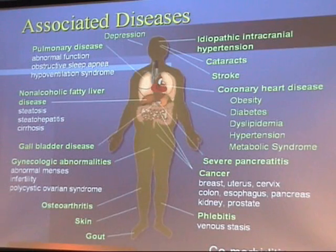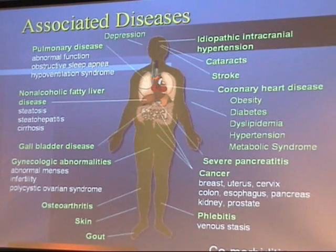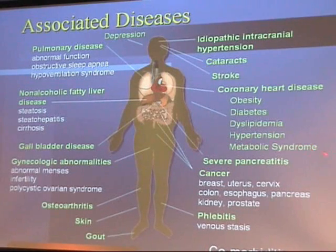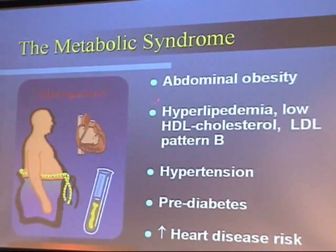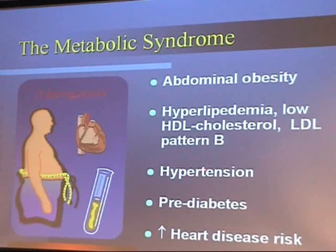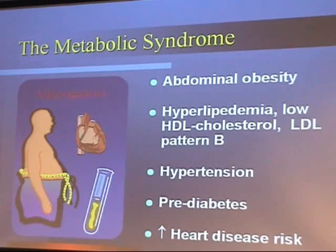One specific condition worth highlighting is metabolic syndrome. If you have this, you're at increased risk for heart disease. These patients are obese, have hyperlipidemia, high blood pressure, and pre-diabetes — all of which predispose them to heart disease.